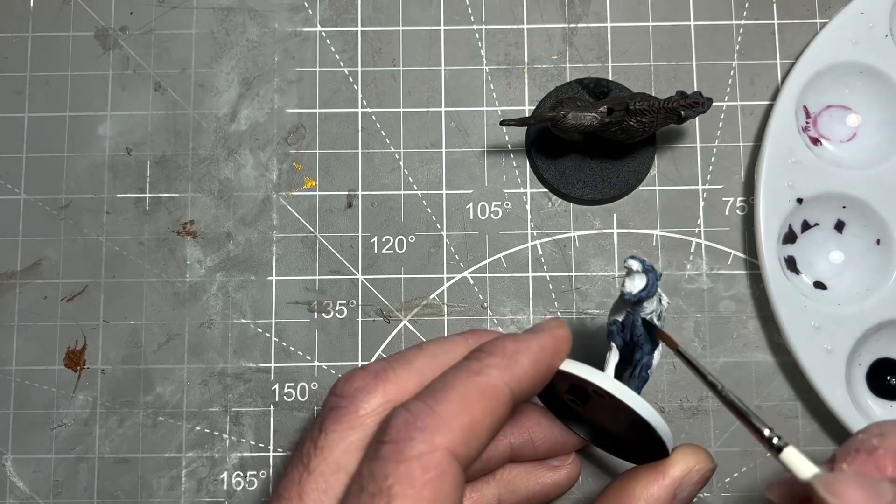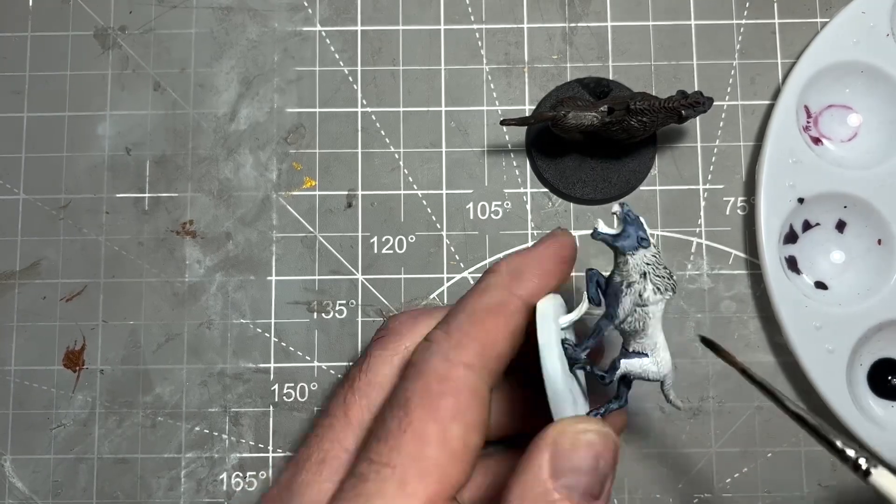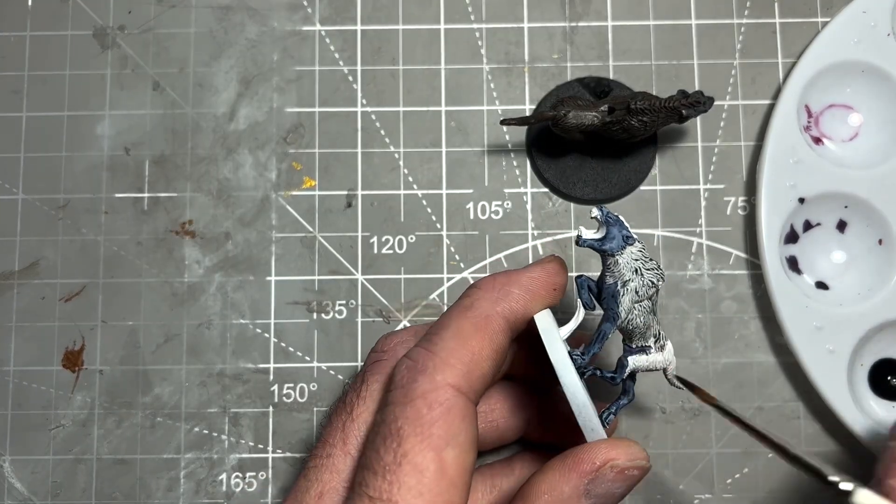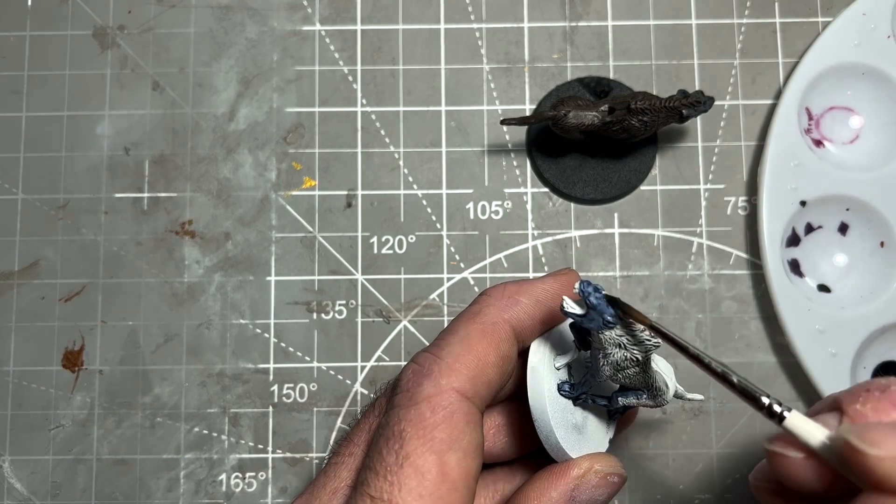Once the skin is painted, we'll move on to the fur. Use Army Painter Speed Paint Holy White on all the fur.